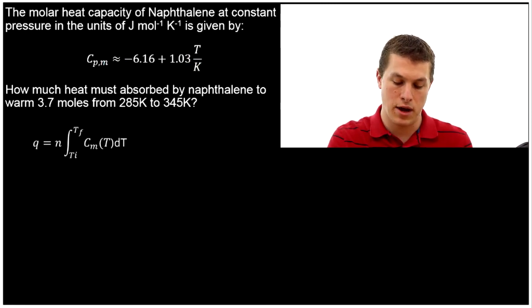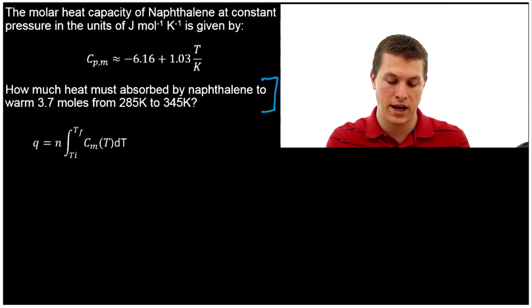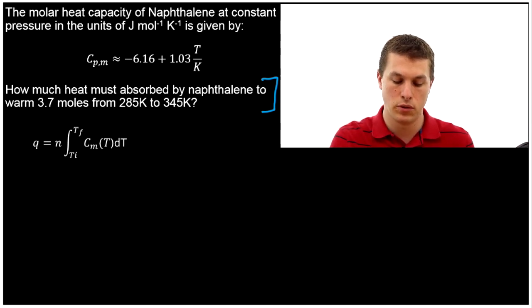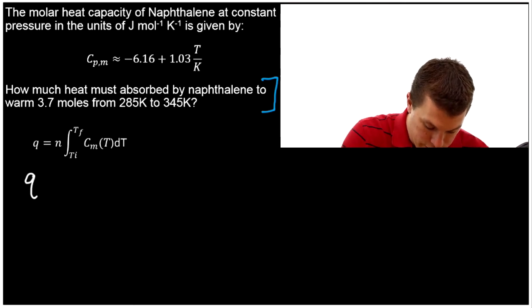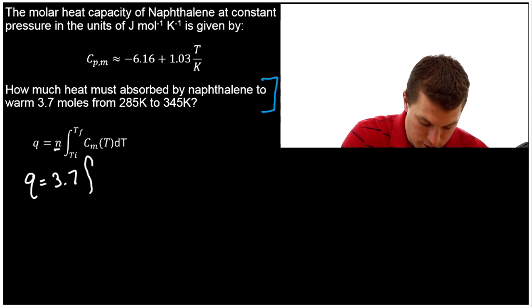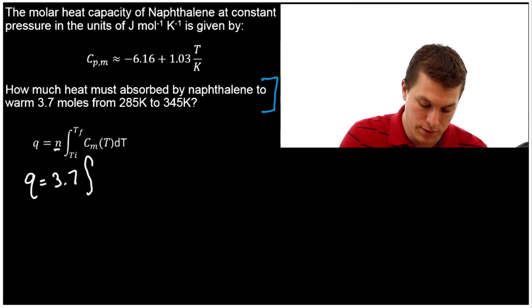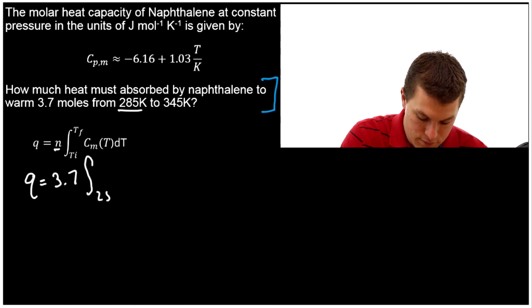Alright, the question now asks in this bottom part: How much heat must be absorbed by naphthalene to warm 3.7 moles from 285K to 345K? So we're going to go ahead and do that problem, and we're going to use our calculus equation. What does that look like? Well I'm going to plug in our variables. So n is just moles, just like in the ideal gas law. And then we're going to integrate from T initial, that's 285, to T final, that's 345. And those are in Kelvin.